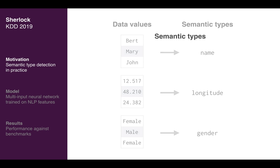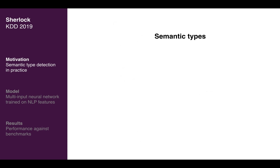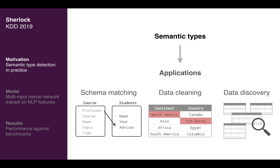Correctly detecting these semantic types is crucial for data science tasks such as schema matching, automated data cleaning, and data discovery.